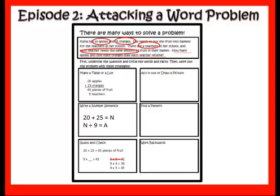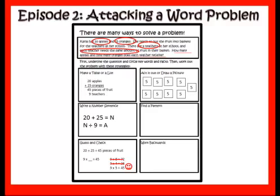I could guess and check. I know that 20 plus 25 is 45 pieces of fruit, and I know that I have 9 baskets to fill. So 9 times some number of fruit is going to get me to that 45 pieces. I know 9 times 8 is 72 — way too big. 9 times 4 is 36 — way too low. Well, 9 times 5 is 45. There we go, I've got my answer. I'm guessing in order to help myself get closer to the answer, not just guessing randomly. I could also draw a picture — I simply drew my 9 baskets and put 5s inside them, but you can easily draw out your apples and oranges so you can see how many each person is getting.